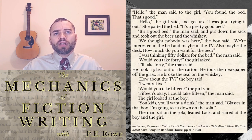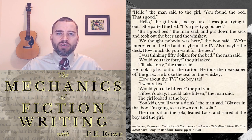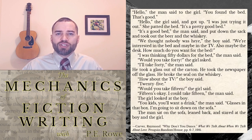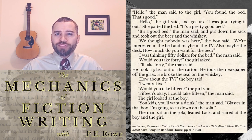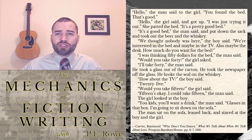Carver does that in the first line of dialogue: 'Hello,' the man said to the girl. From that point on, the reader can infer from the context who's speaking to whom. 'How about the TV?' the boy said. '25.' 'Would you take 15?' the girl said. '15's okay. I could take 15,' the man said. Dialogue is a game of call and response, just as a conversation is in real life. So the reader can infer from the context that the speaker of '25' is the man. But the questions could come from either the boy or the girl, so they must be tagged, because it's very important to the story who's asking the questions in this case.